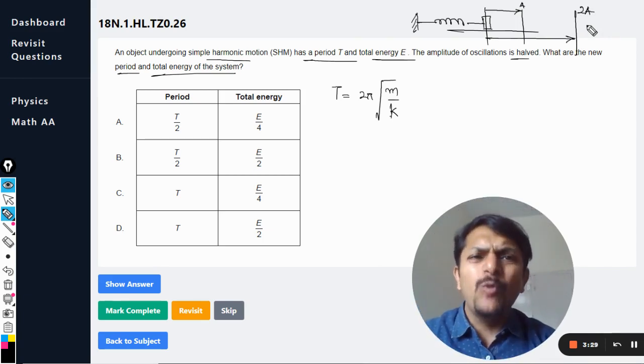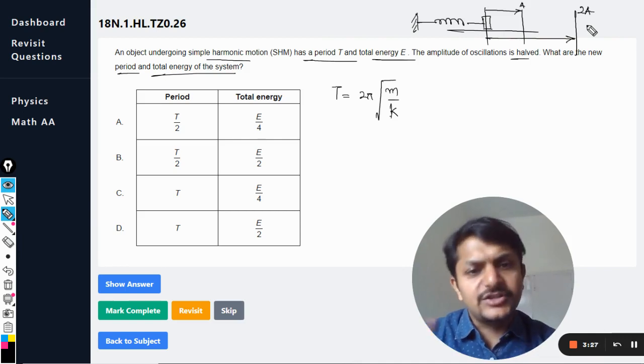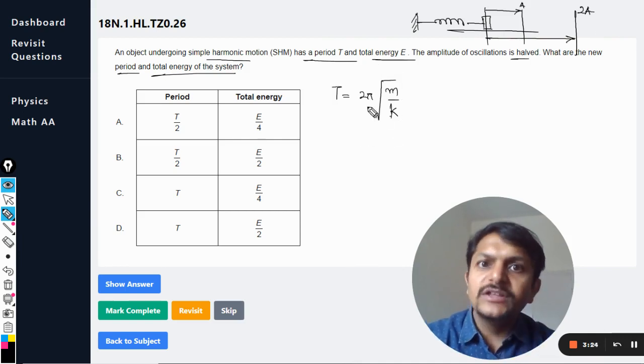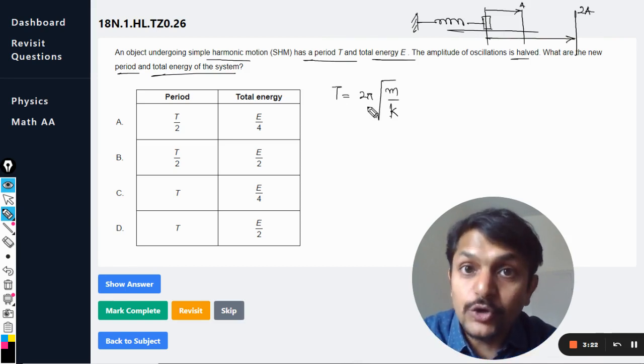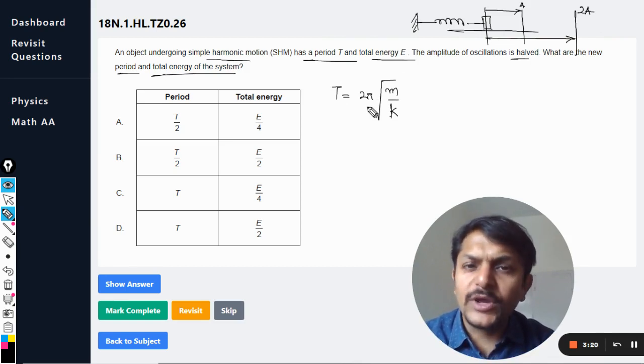If this kind of thing is happening and they say that the time period does not change, people would be asking why the time period does not change. It's okay that from the formula we know the time period is not dependent on the amplitude, but practically how can you explain that?